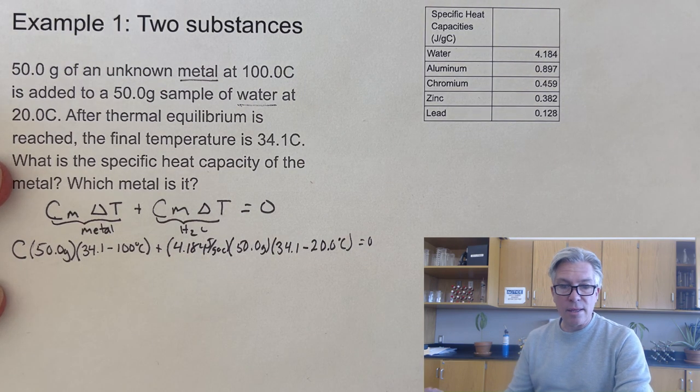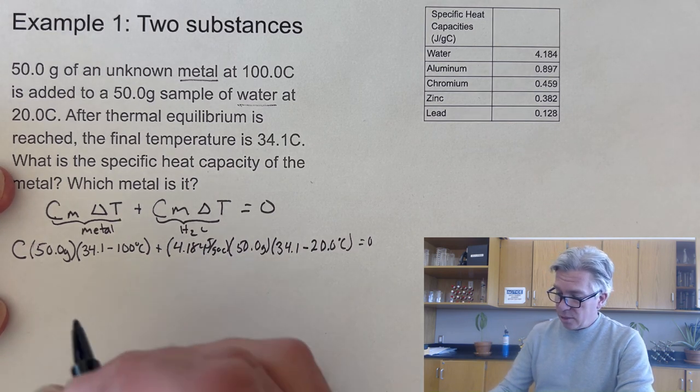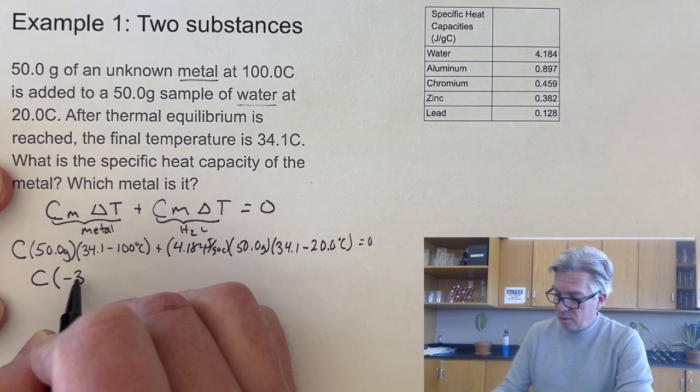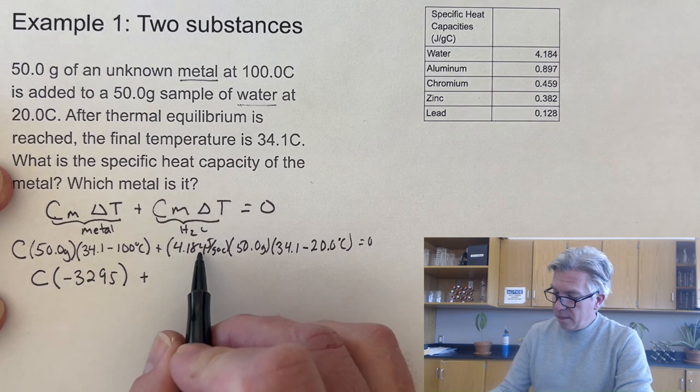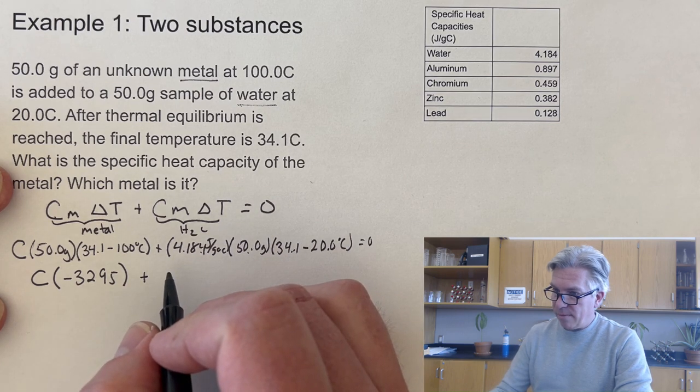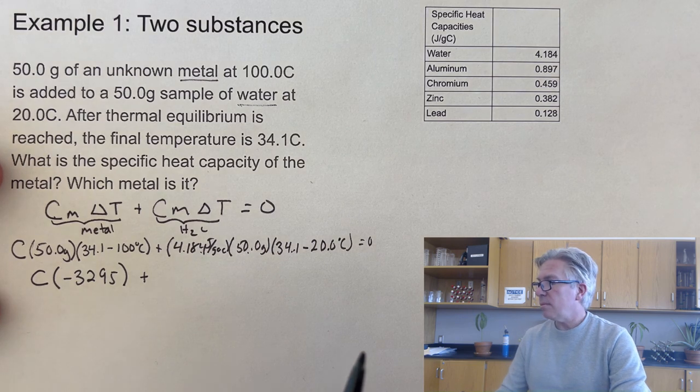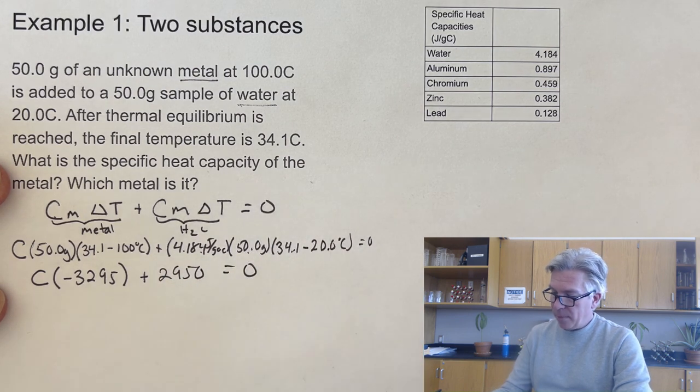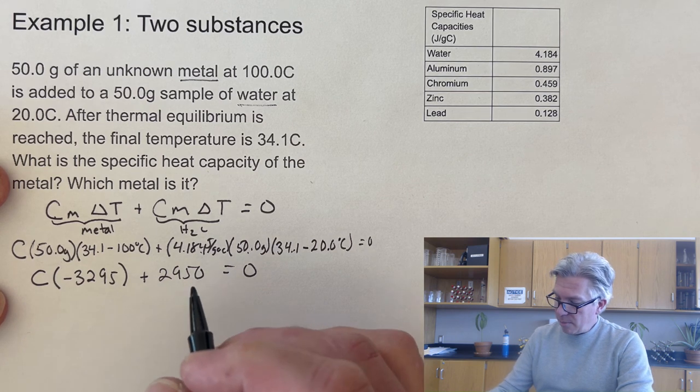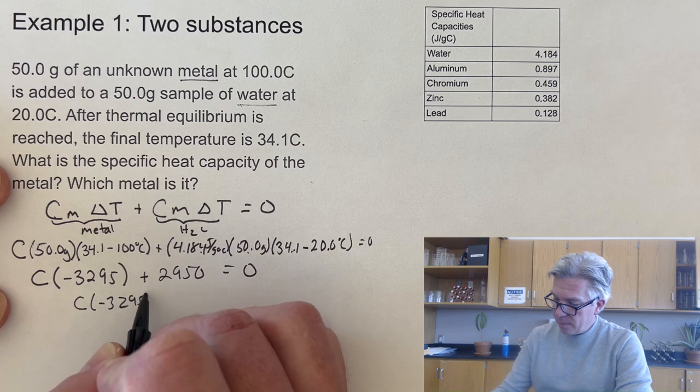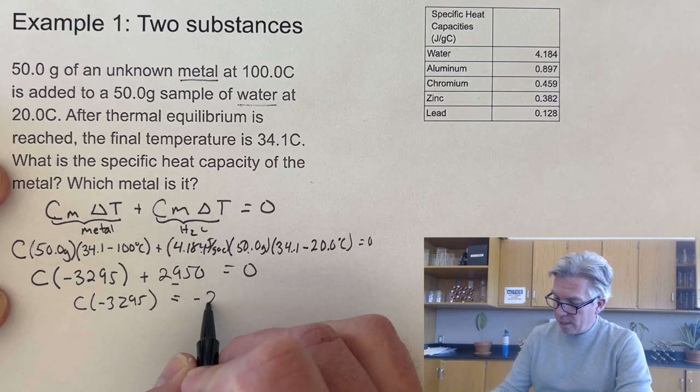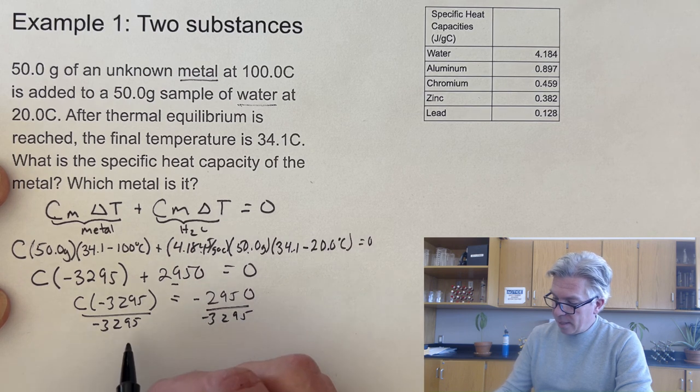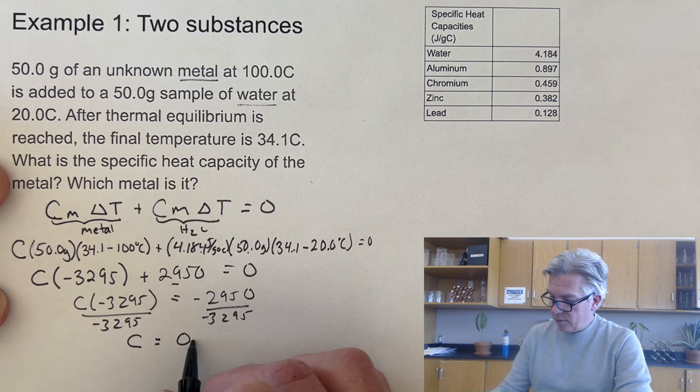Now, it gets a little annoying because you have to do a little math. Let's collect these terms together. This works out to be negative 32.95, and if I multiplied these three things together, I get 29.50. By subtracting both sides, I get negative 29.50 on the other side. If I divide both sides by negative 32.95, I get C equals a value of 0.895.